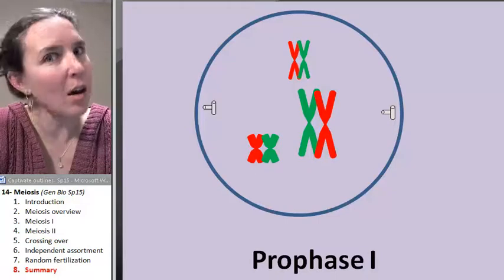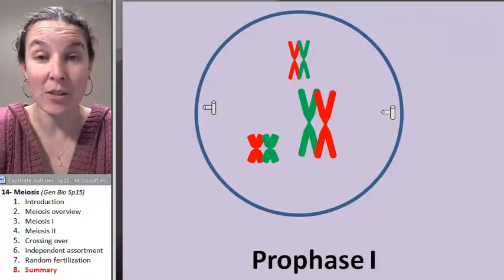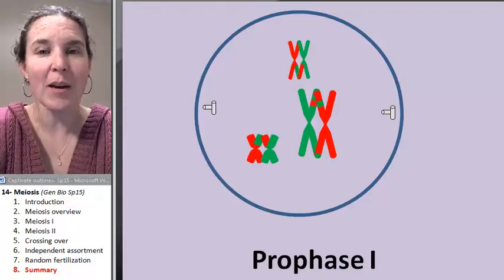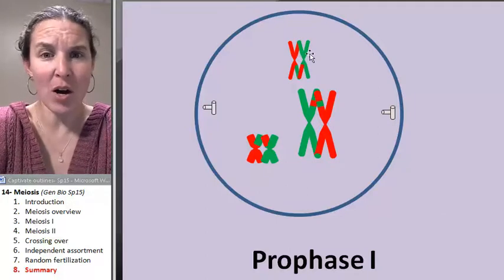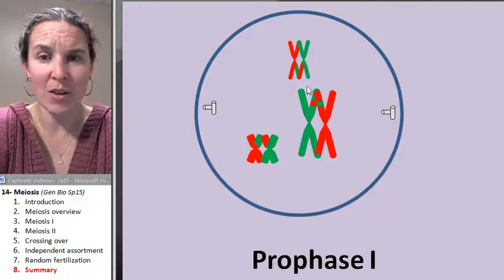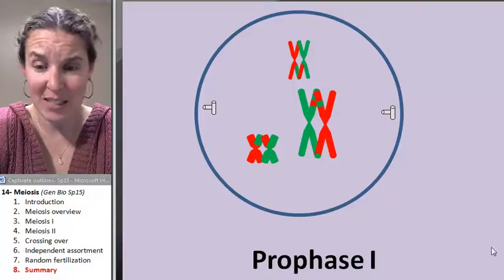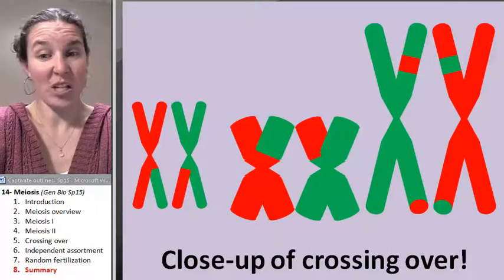Homologs hook up. That's the unique event in meiosis that does not happen in mitosis. My homologs have hooked up. Crossing over occurs. You can see that not every part of the chromosome crosses over. It's random about what part crosses over and what part doesn't. And that's awesome. We just swapped bits.